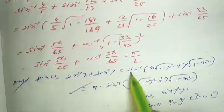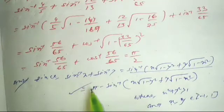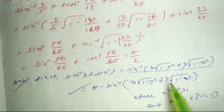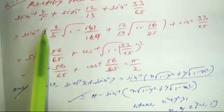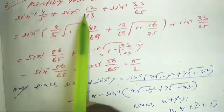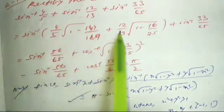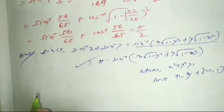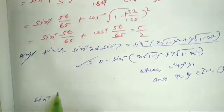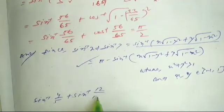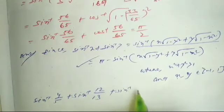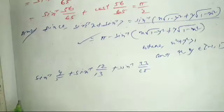Directly, since sin⁻¹x + sin⁻¹y equals π − sin⁻¹[ x · √(1 − y²) + y · √(1 − x²) ] where x² + y² > 1 and x, y belong to [−1, 1]. We have sin⁻¹x + sin⁻¹y from the formula, that is π minus sign inverse. So it is sin⁻¹(4/5) + sin⁻¹(12/13) energy, plus sin⁻¹(33/65).